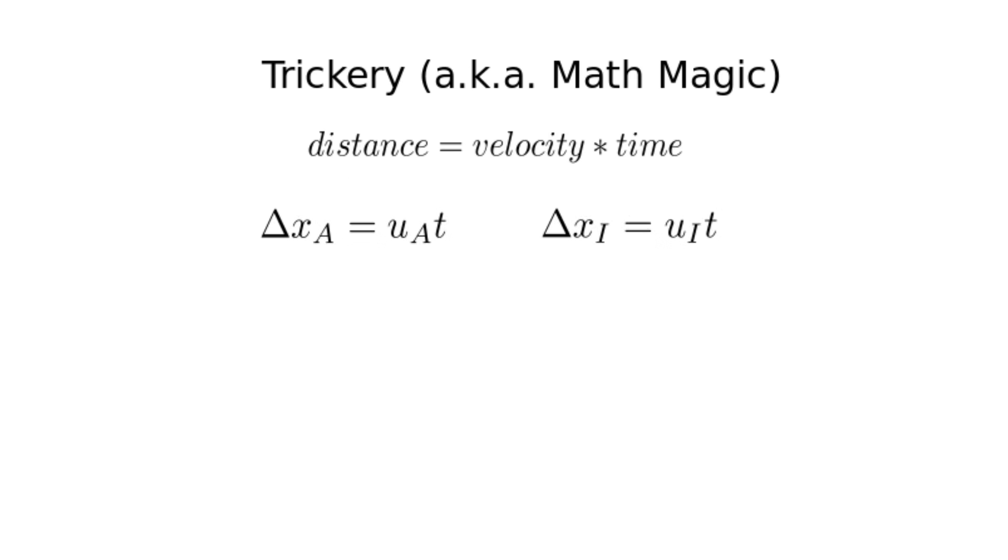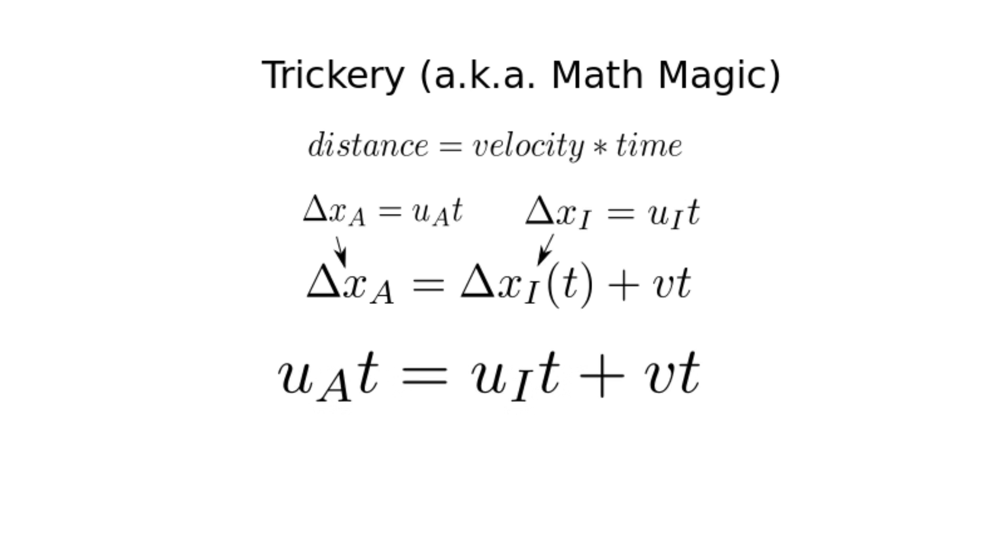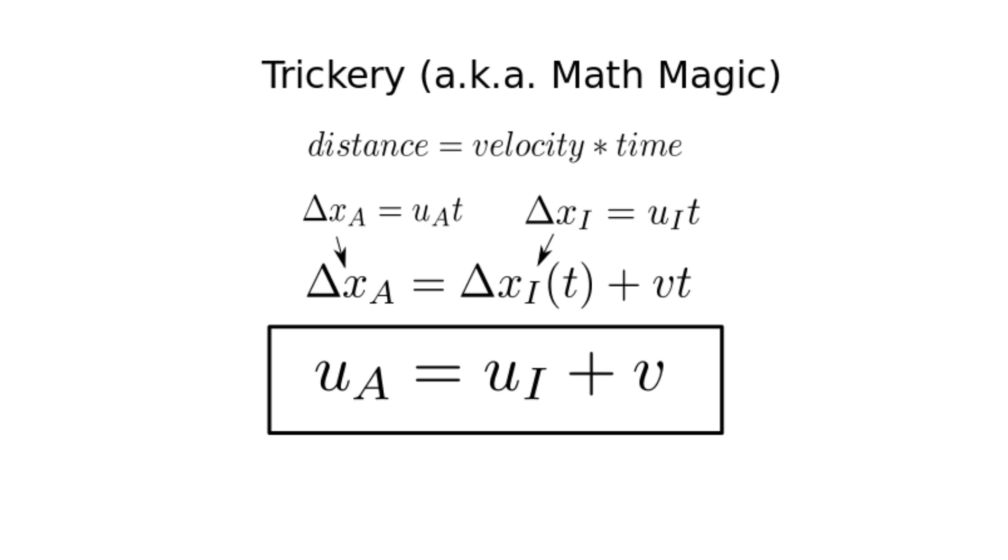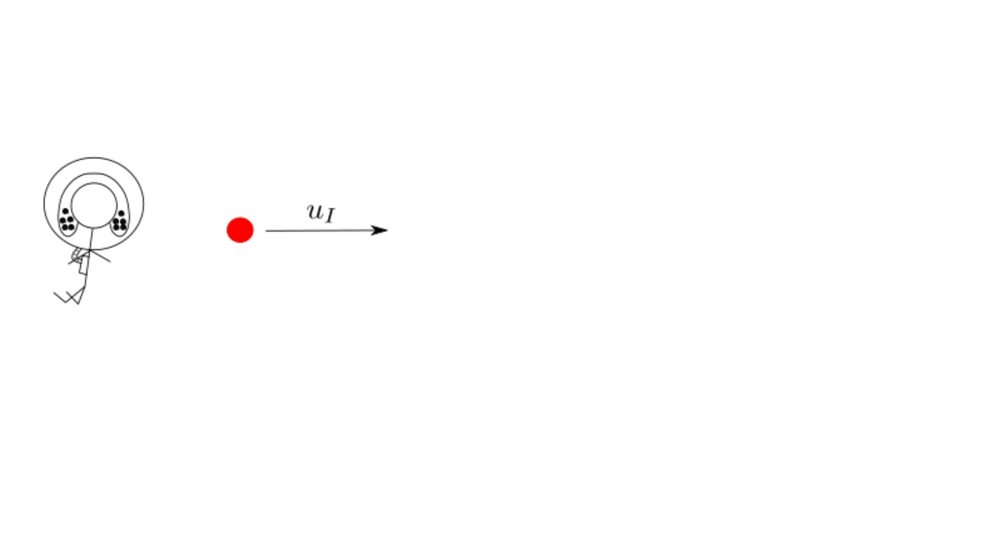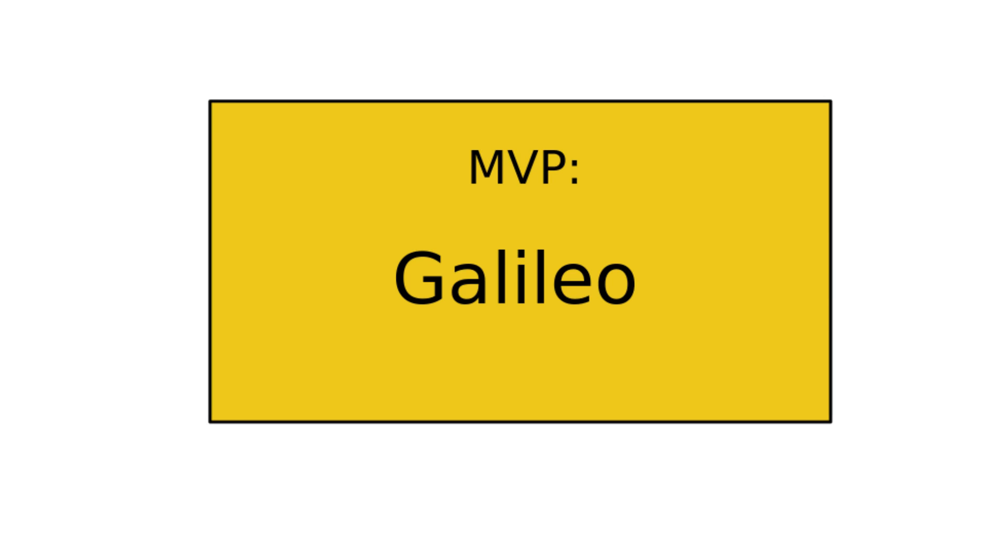We then plug these into the inverse transformation since we want to find out how fast the ball is moving according to Albert. This gives us ua times t is equal to ui times t plus v times t. Then we can cancel off the t in each term and that gives ua is equal to ui plus v. This says that Albert sees the ball travel at the speed Isaac throws it plus the speed Isaac is moving relative to Albert. This is exactly what we would expect, so another point for Galilean relativity.